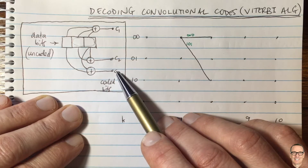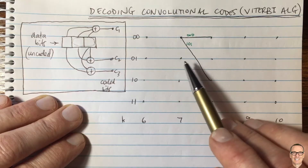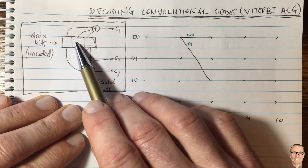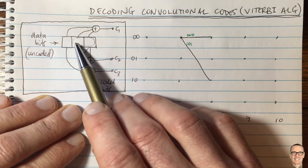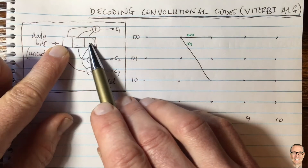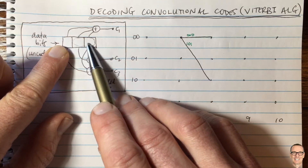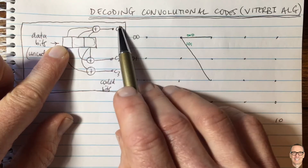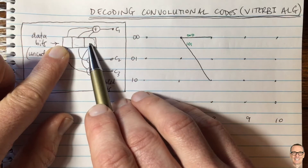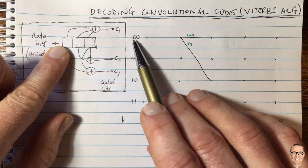So how do we check and use that structure? The first step is to set up a trellis. The way to do that is to define all the elements of the shift register except the last one as the state. In this case, it's a one-third rate convolutional code with three elements in the shift register, so the state has two elements. I've drawn out the possibilities.